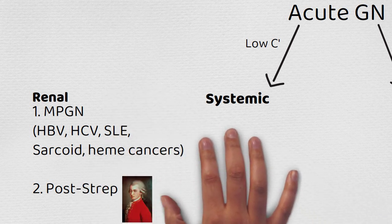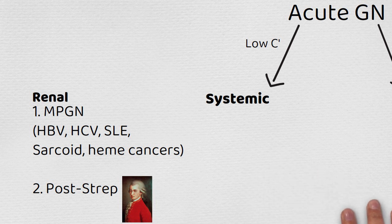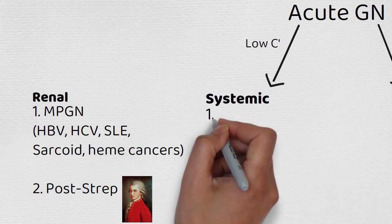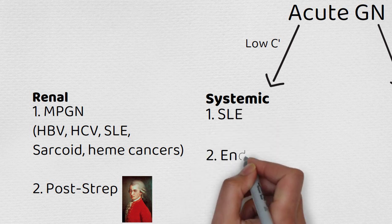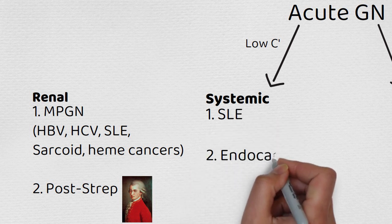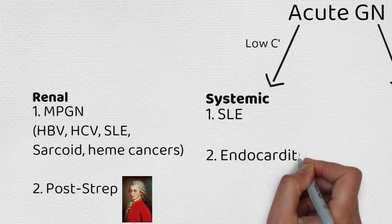When it comes to the systemic diseases on the low complement arm, first is lupus, second is endocarditis, and third is cryoglobulinemia.